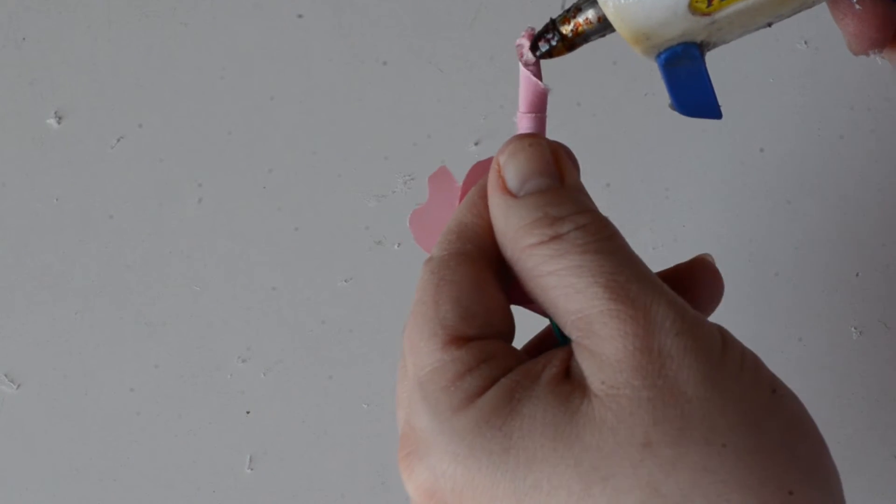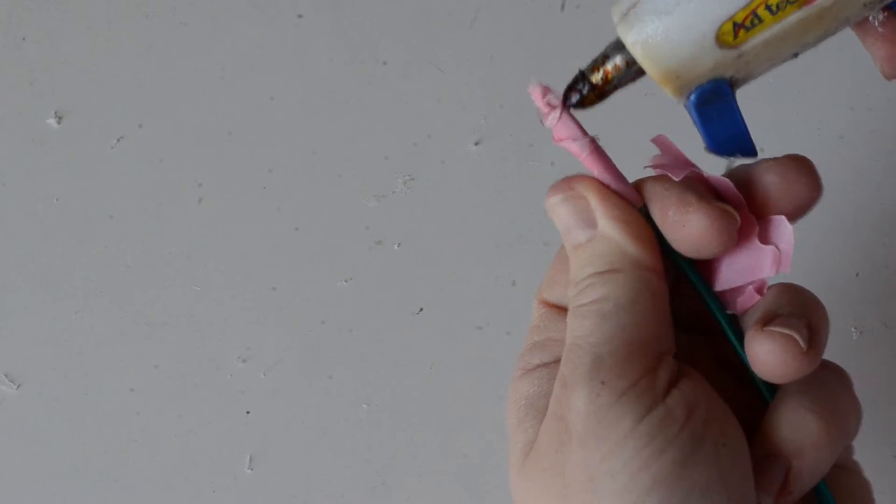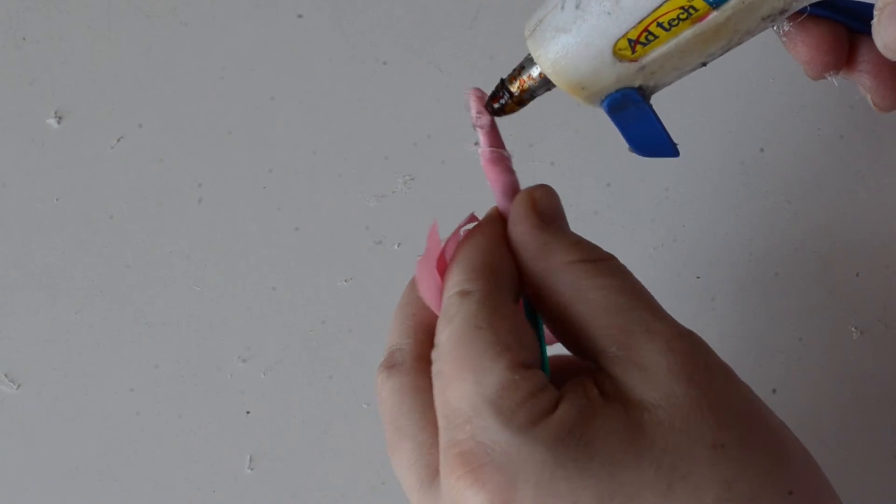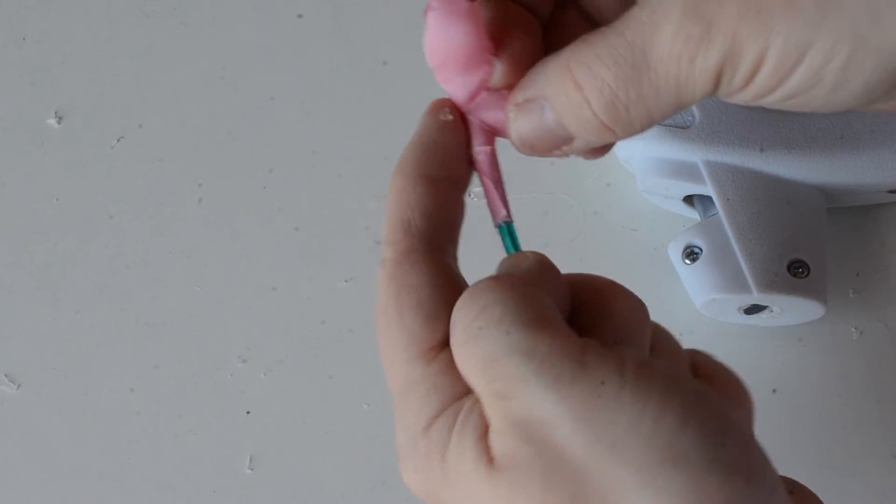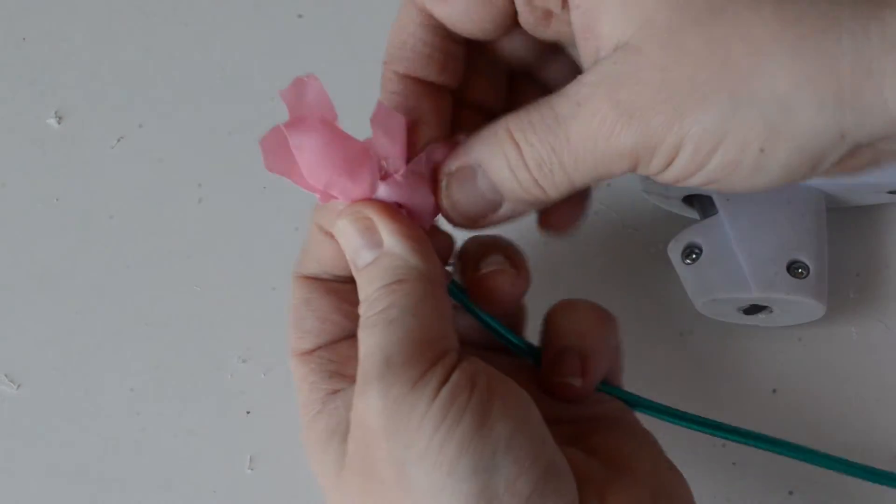To add petals, place a generous amount of glue along the entire top of the stem. Then using the slit, add your center petals.